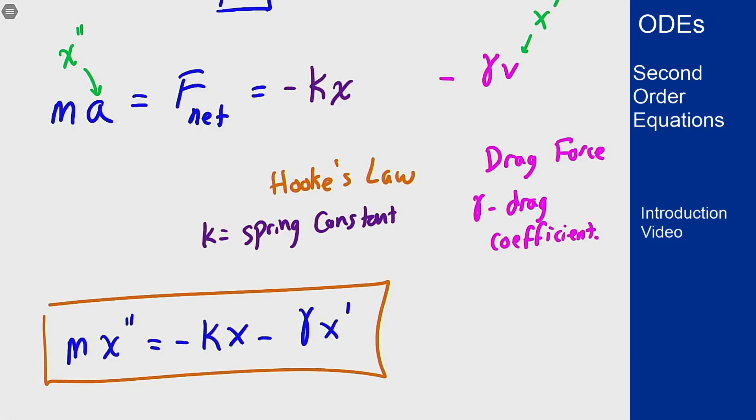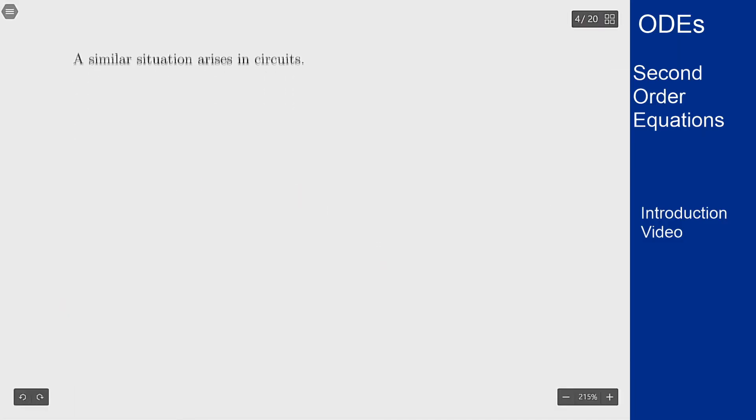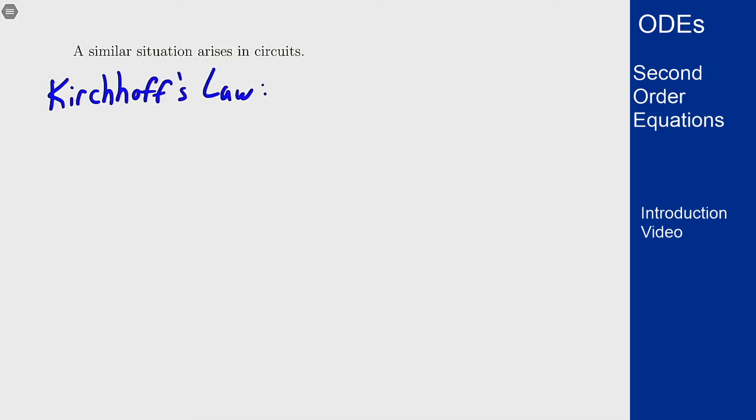You can get a very similar equation if you look at circuits. The main property in circuits, as opposed to Newton's law, is Kirchhoff's law, which means the total voltage drop around a closed circuit must be zero.